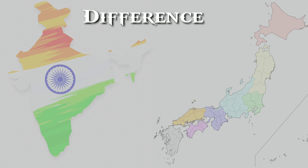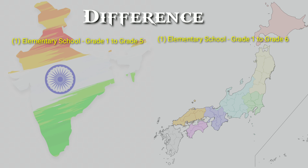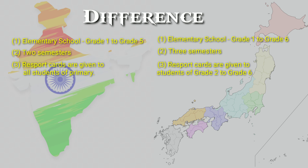Now let us see some differences in the evaluation systems of Kendra Vidyalai and Kogane Elementary School. First, elementary schooling is from Grade 1 to Grade 5 in Kendra Vidyalai, whereas in Kogane Elementary School it is Grade 1 to Grade 6. Second, the academic year is divided into two semesters in Kendra Vidyalai, whereas in Kogane Elementary School it is divided into three semesters. Third, report cards are given to all students in Kendra Vidyalai, but in Kogane Elementary School report cards are given only to students from Grade 2 to Grade 6 — Grade 1 students do not receive report cards.